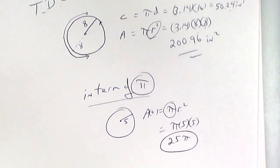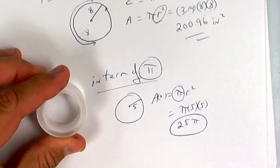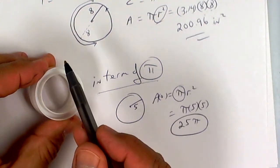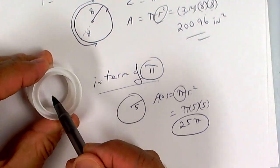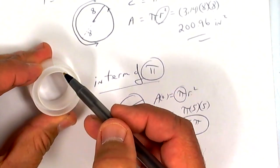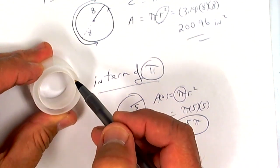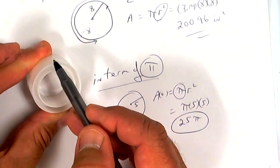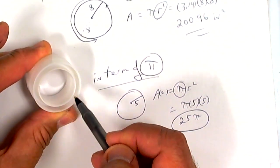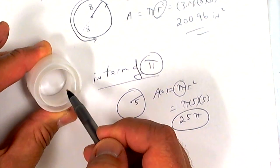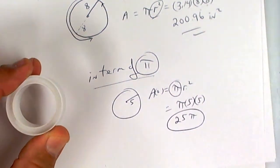One last thing, and this is something for you to think about. Notice that this has an outer circle and an inner circle. If you want to find the area of the region in between, you would take the big circle minus the little circle—the area of the big circle minus the area of the little circle. Just something to think about. We'll talk about that maybe tomorrow. Have a good morning.